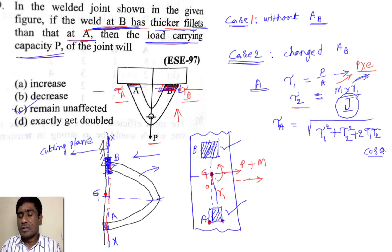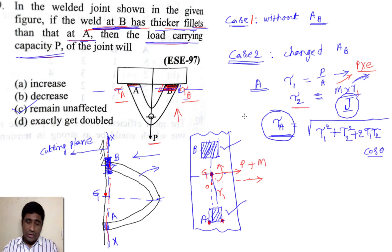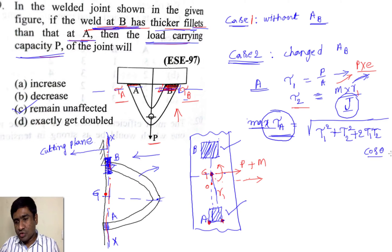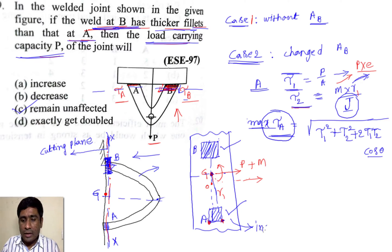The resultant shear stress at A is: tau_A = sqrt(tau_1² + tau_2² + 2·tau_1·tau_2·cos θ), where θ is the angle between the primary and secondary stress vectors. For maximum stress, assuming θ = 0, this simplifies to tau_1 + tau_2. Compared to the previous case, we are now adding a positive tau_2 to tau_1, so the resisting stress at section A is increasing.